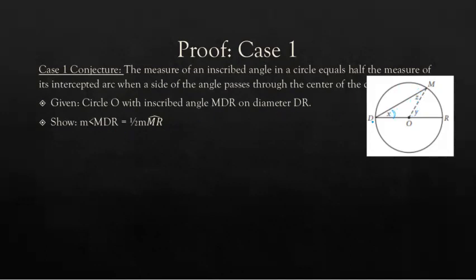Angle MDR is labeled as X, angle MOR is labeled as Y, and angle DMO is labeled as Z. Since Y is our central angle, the arc measure equals Y. So instead of proving X equals one half of the arc, we can say we want to prove X equals one half of Y.